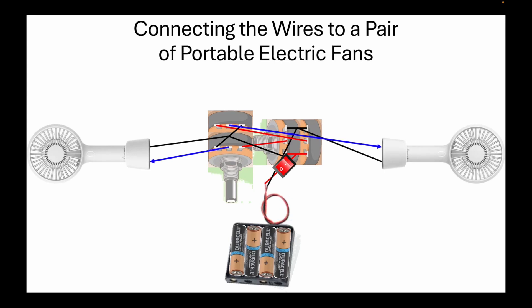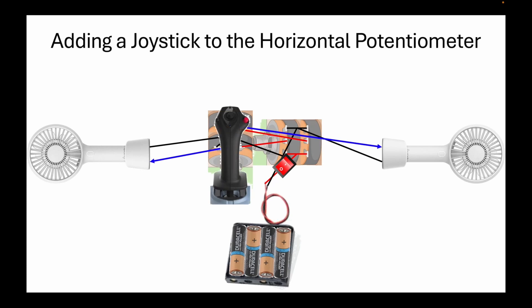Then we will connect the wires to a pair of portable electric fans, which will be our makeshift propellers for this miniature version of airplane wings. Then we will add a joystick to the horizontal potentiometer to improvise a flight control. In other airplanes, this is a yoke, a curved steering wheel to maneuver the airplane, like in a Boeing 737.